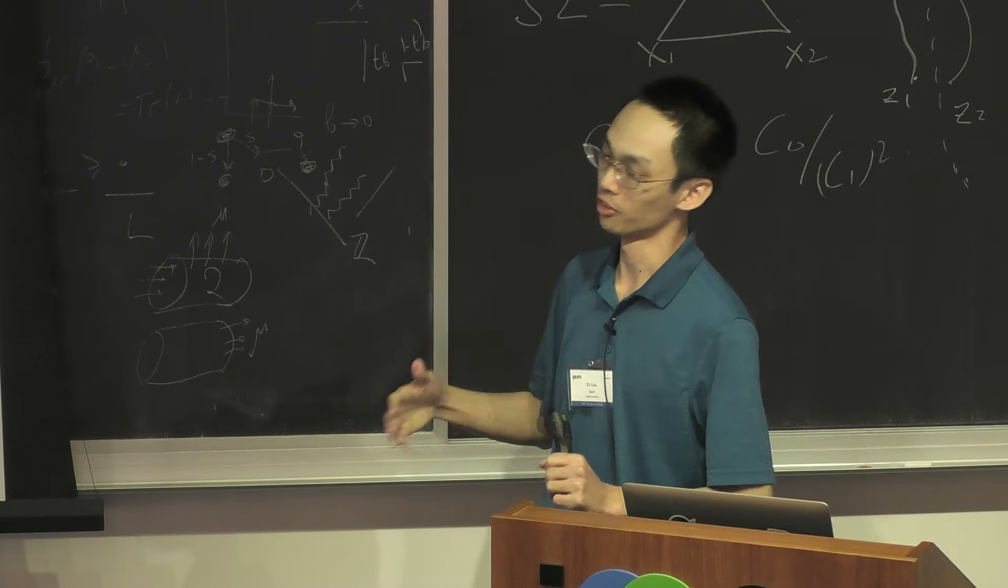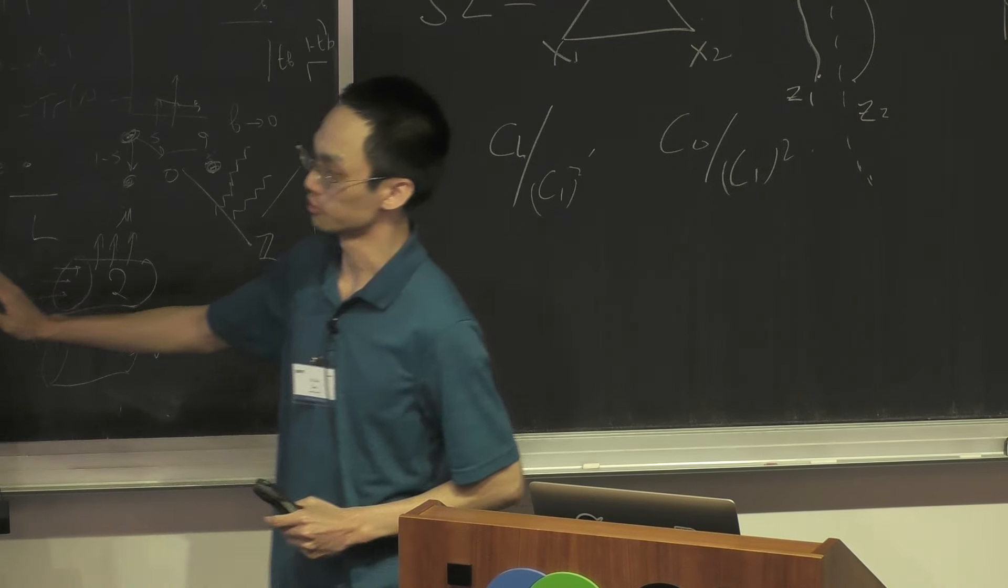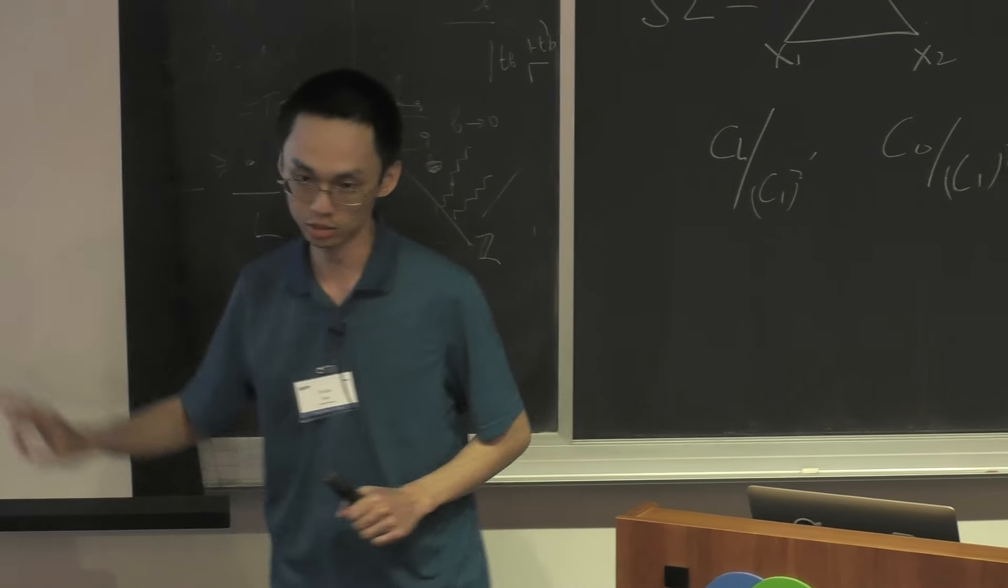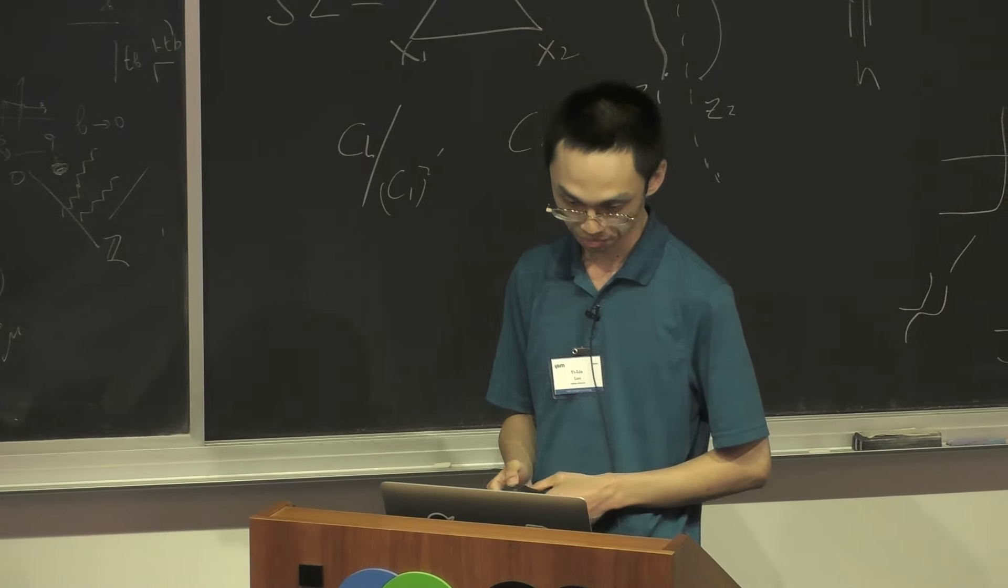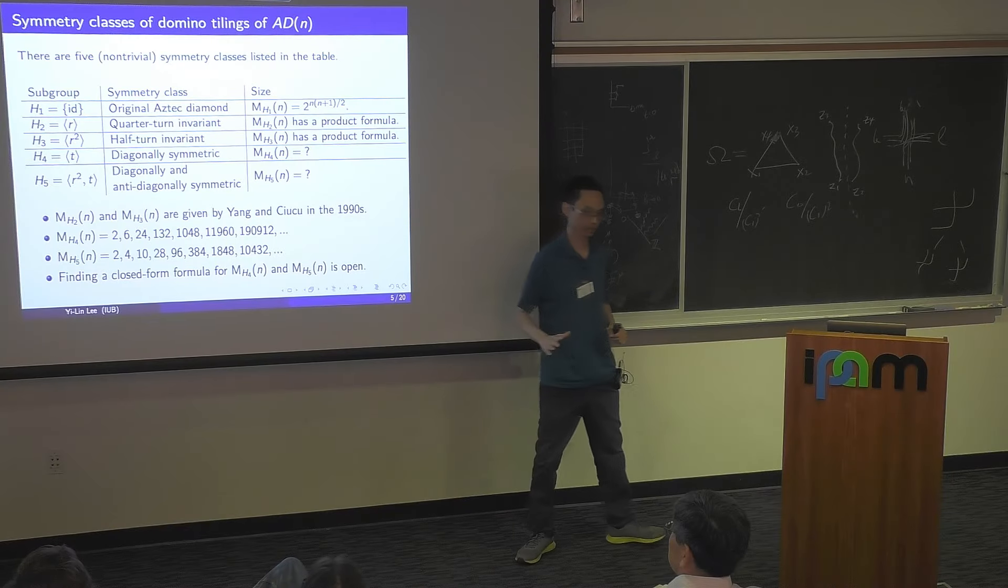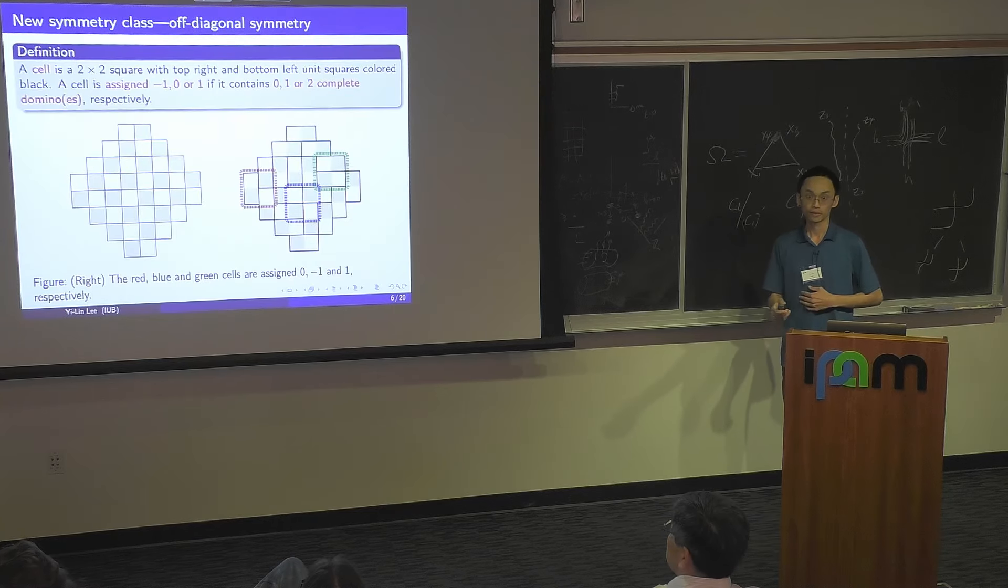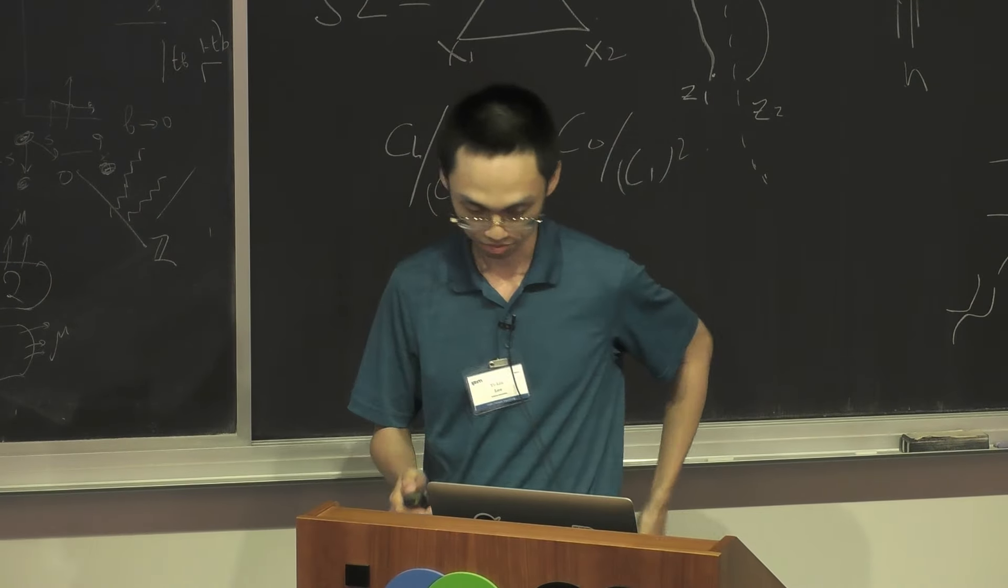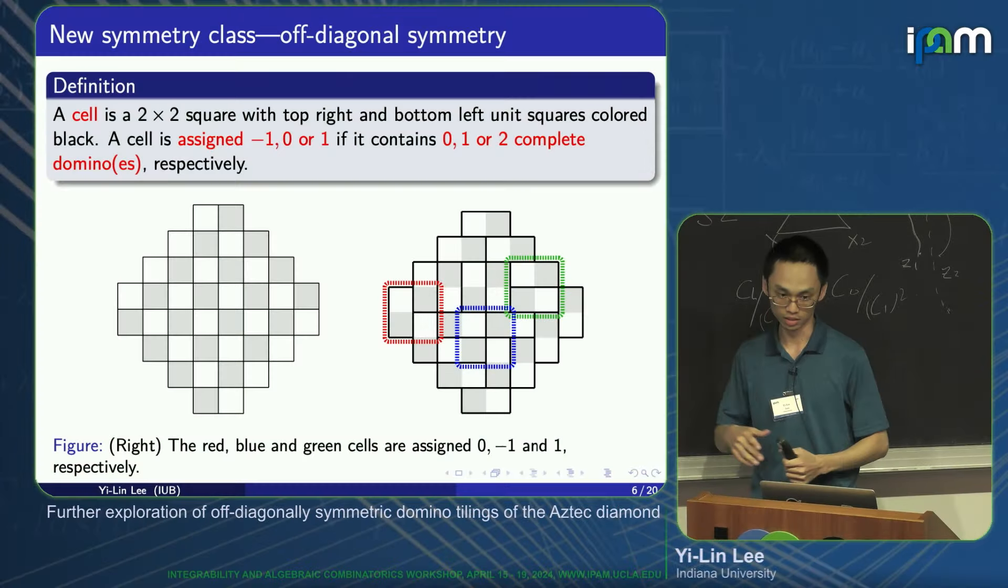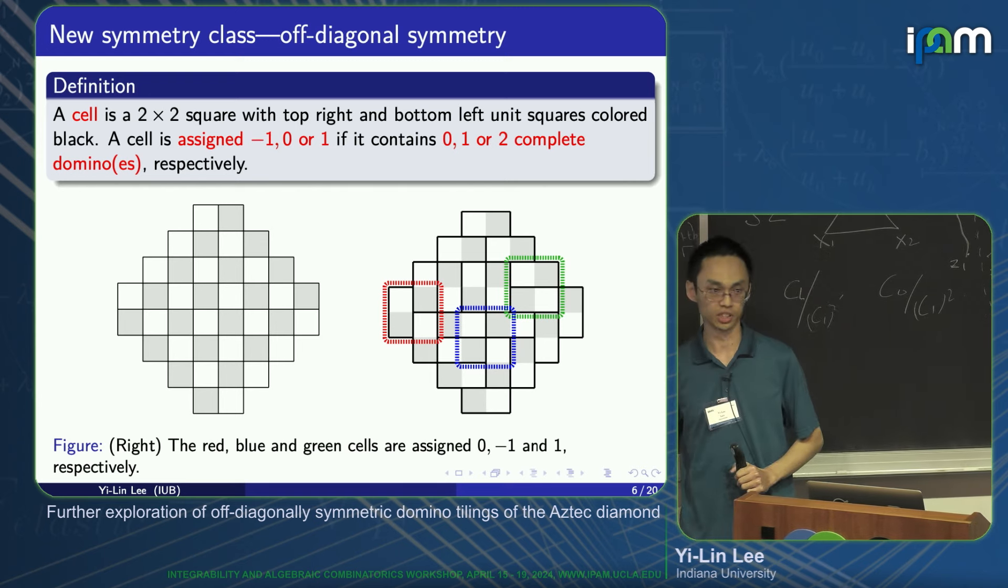In these two cases, we have only data. So far, there's no good method to come up with the closed-form formula. So basically, finding a closed-form formula for the last two symmetry classes is still open. In this talk, I will focus on H4, which is diagonally symmetric, plus an extra condition. The numbers are not round, so somehow it's very difficult to find a product formula.